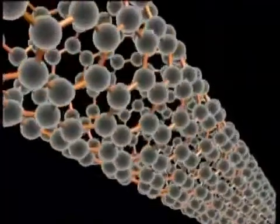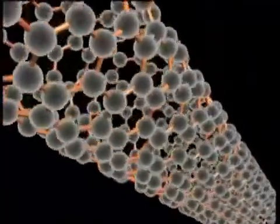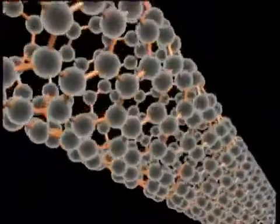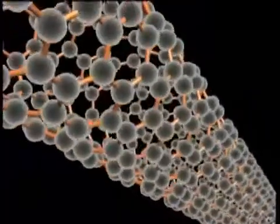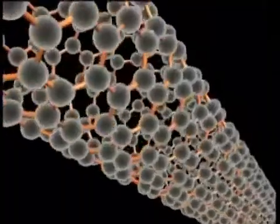Another fullerene is a bucky tube looking like rolled up chicken wire. They have intriguing properties and may one day be stronger than diamond. They may be used as micro superconductors.